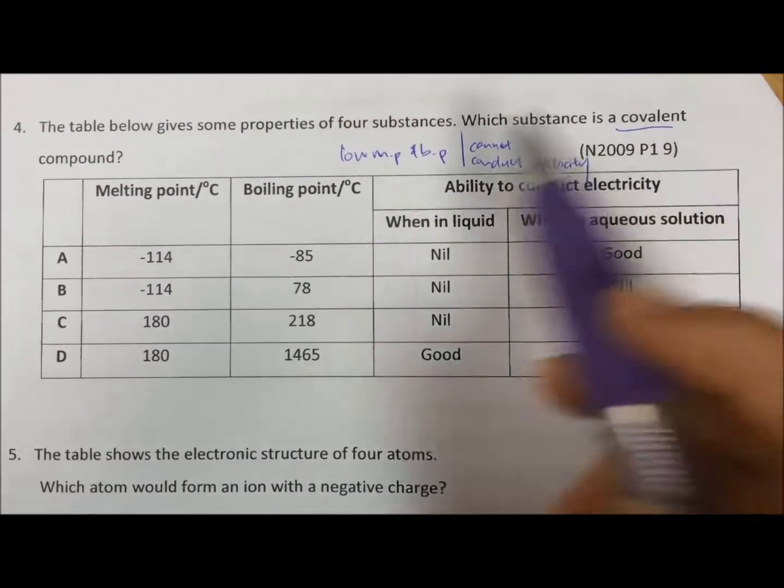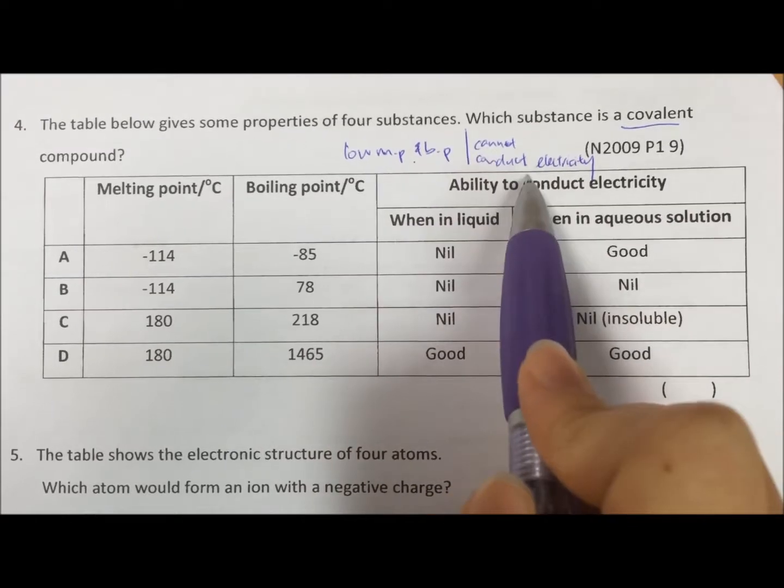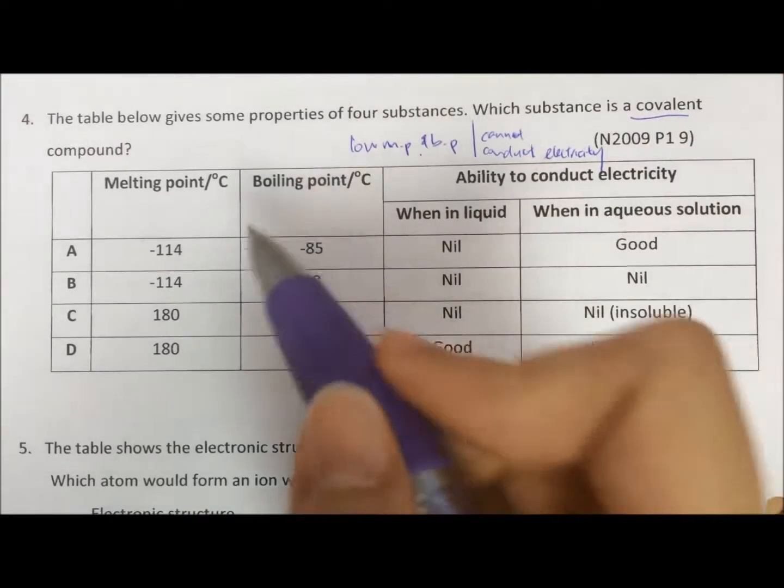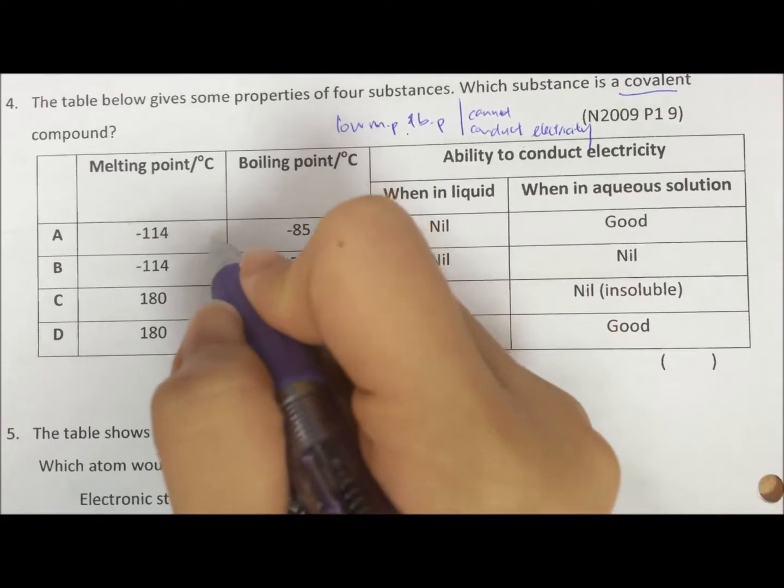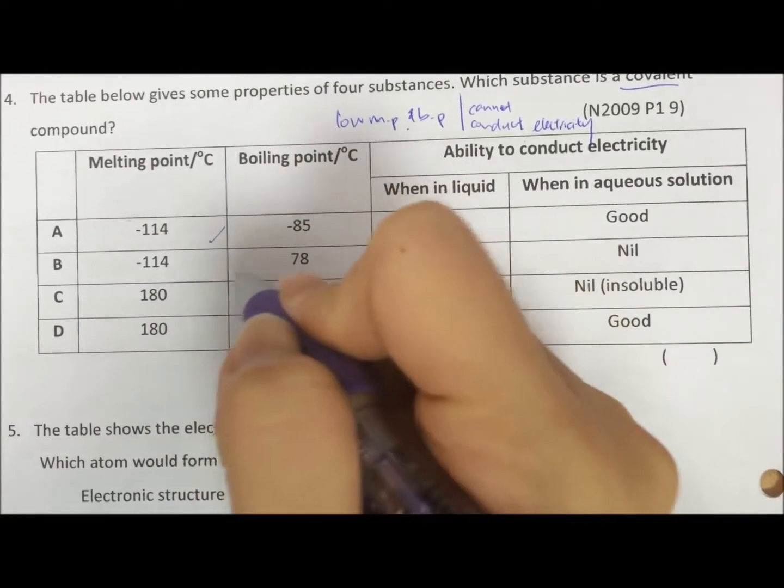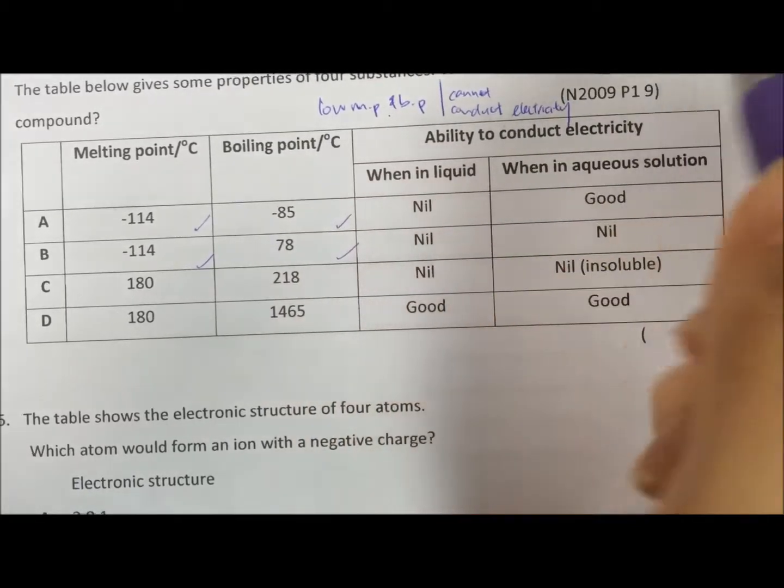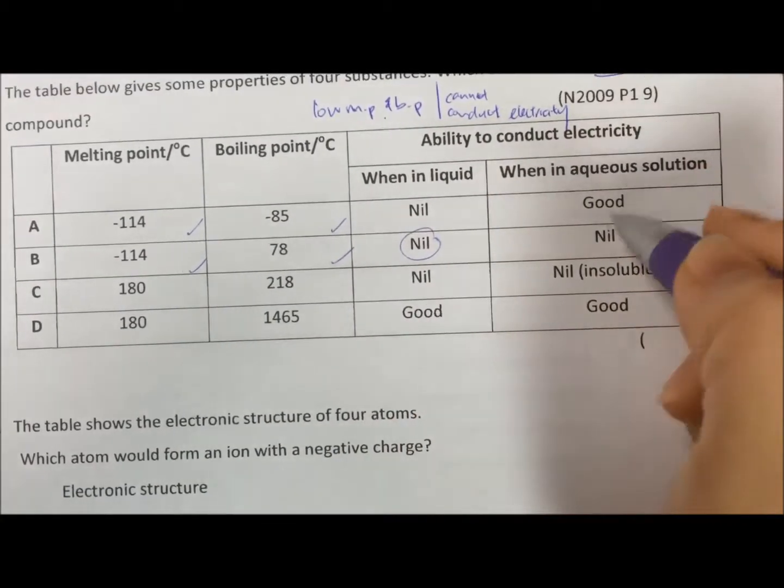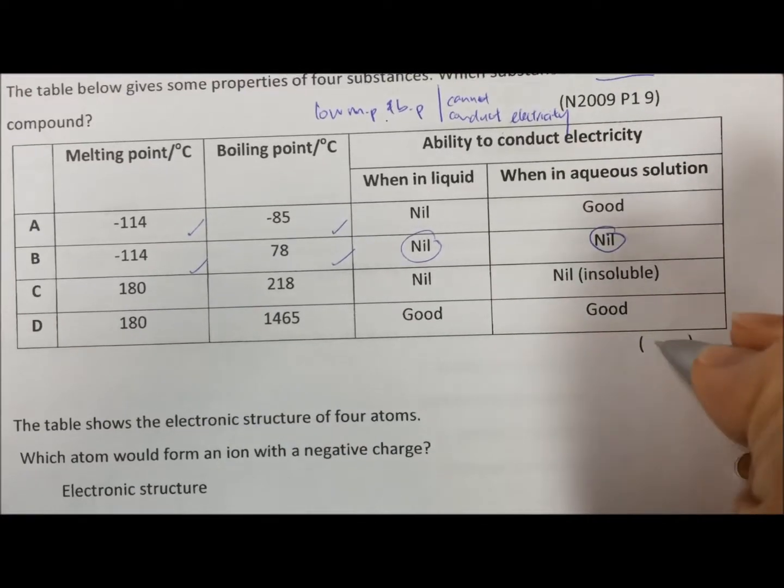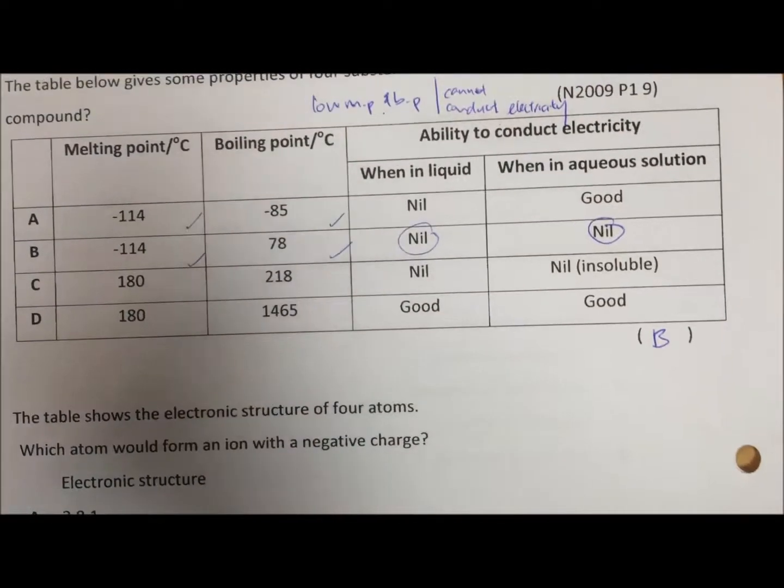Okay, next one, question 4. It says covalent compound. So covalent compound will have low melting and boiling point, and it cannot conduct electricity. So if you look at option A and B, both have low melting and boiling point. Then you check, option B cannot conduct electricity in any state. So the answer is B.